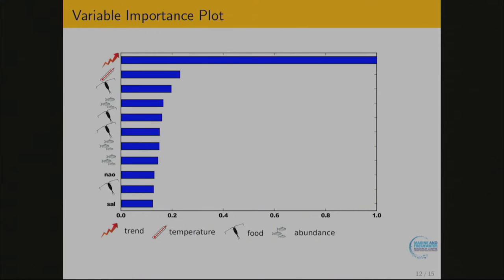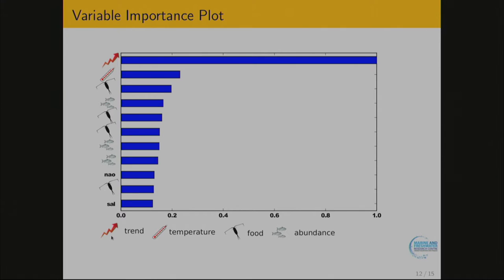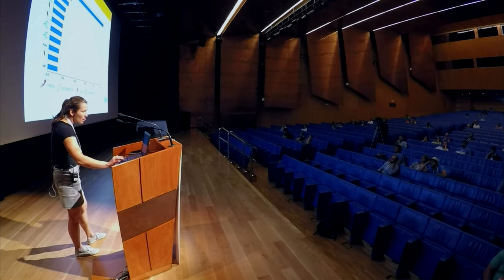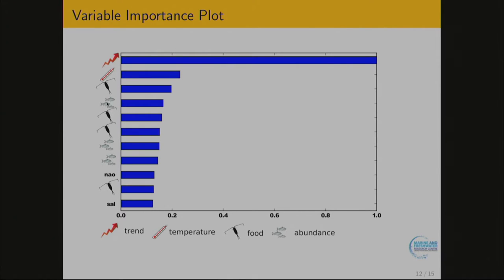To find out which variables play a role, the way variable importance is calculated is: the most important variable is used to split a tree more often — by counting how many times it's used, we can determine its relative importance. The first and most important feature is trend, basically a time trend in months — it's used in 100% of cases. After that, we have sea surface temperature, then food availability and fish abundance.